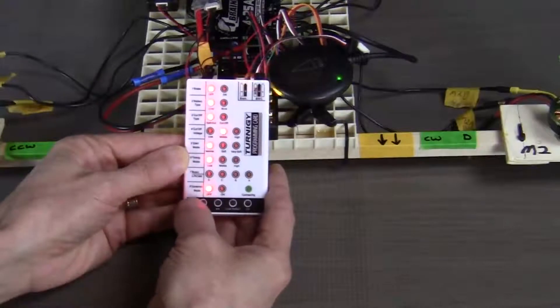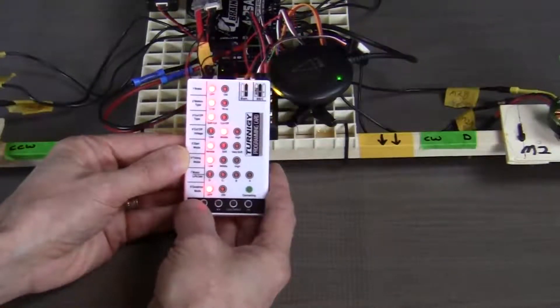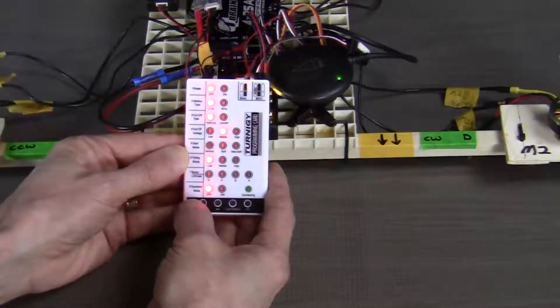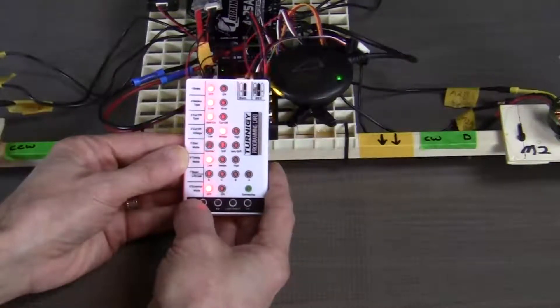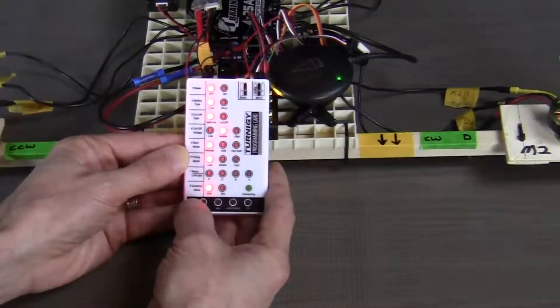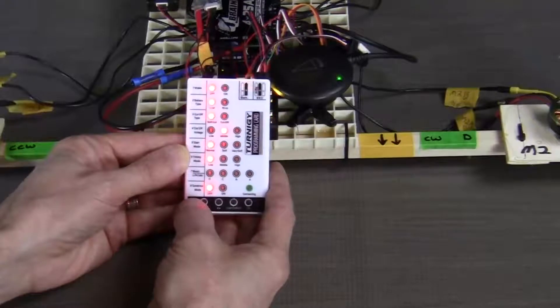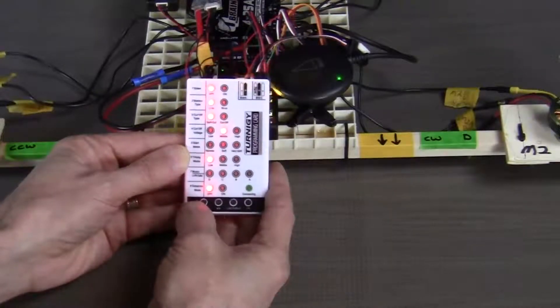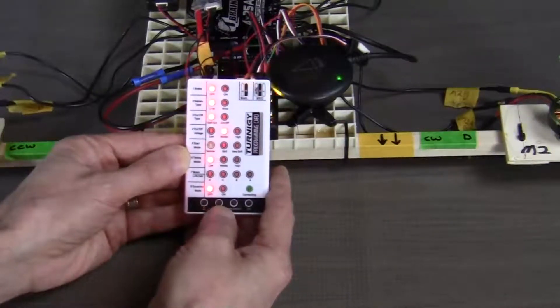Item number five is the start mode. The start mode options determine how quickly the motors will accelerate from a stationary takeoff. A normal setting will get the quadcopter off the ground very quickly. A soft or very soft setting will get the craft off the ground more slowly. For this build, our choice is to set this to very soft, but you can set it to any of your preferences.